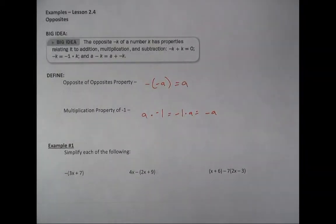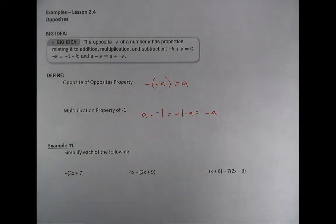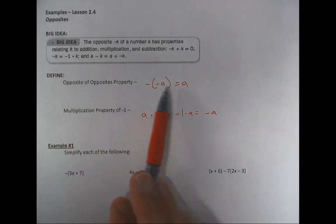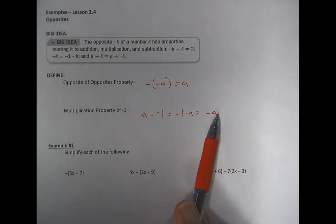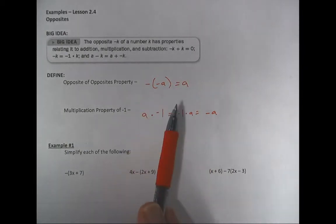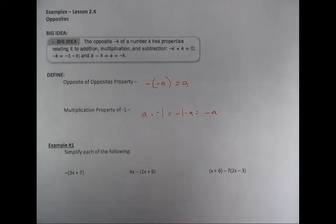This is lesson 2.4 — we're looking at opposites, which is basically your positives and your negatives and their corresponding distance from zero. A negative times a negative gives you a positive, and anything times negative one gives you the opposite answer. A negative times a positive in any order gives you a negative.